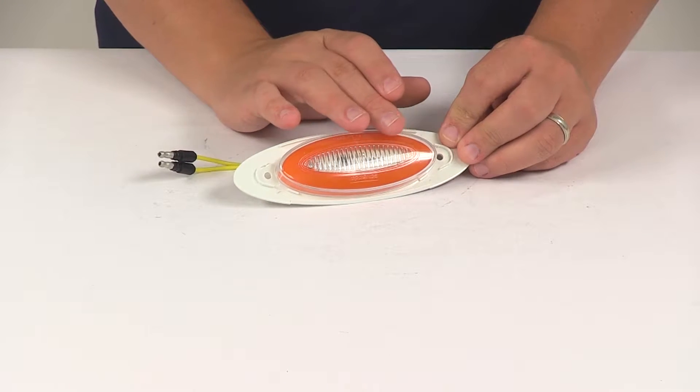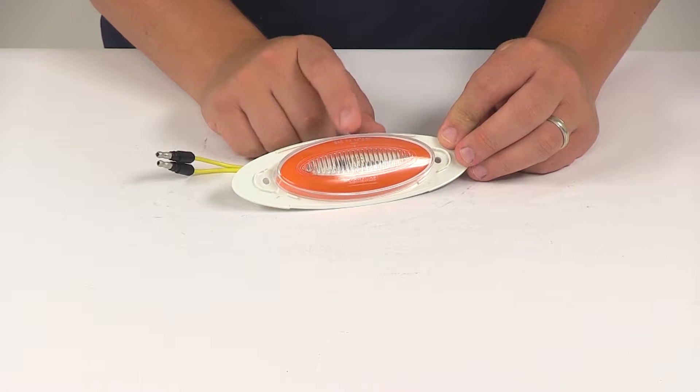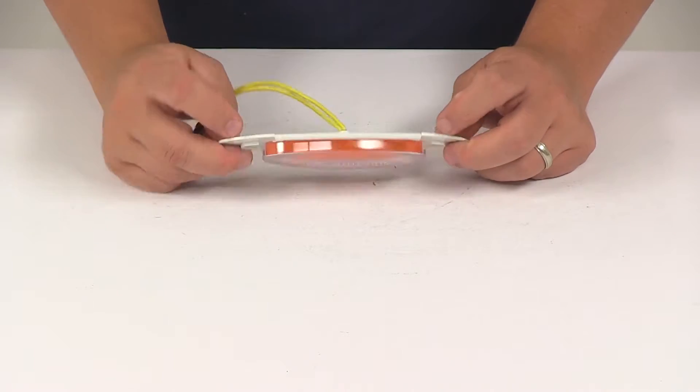The unit features a nice clear lens with amber LEDs. The lens and housing are polycarbonate construction.